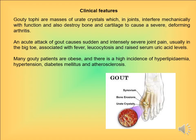Clinical features of gout: gouty tophi are masses of uric acid crystals deposited in joints that interfere mechanically with function and also destroy bone and cartilage, causing severe deformity. An acute attack of gout causes sudden and intensely severe joint pain, usually in the big toe, associated with fever, leukocytosis, and a rise in serum uric acid levels. Many gout patients are obese, and there is a high incidence of hyperlipidaemia, hypertension, diabetes mellitus, and atherosclerosis.